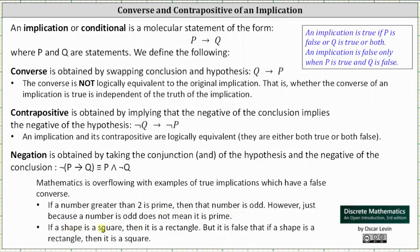Just because a number is odd does not mean that it is prime. Similarly, if a shape is a square then it is a rectangle is a true implication. But again, the converse is false. If a shape is a rectangle then it is a square is false.